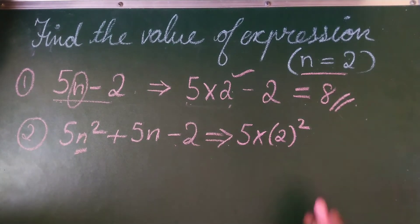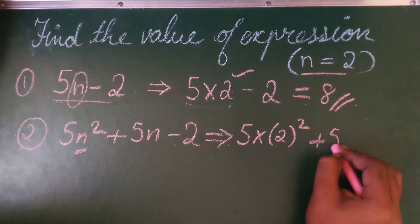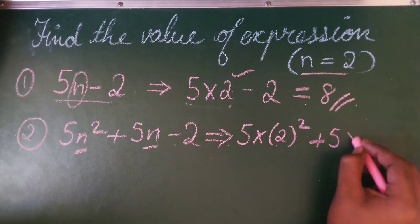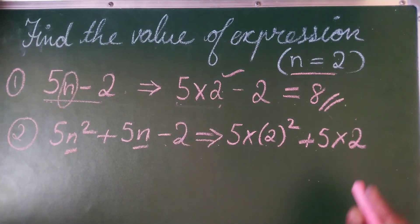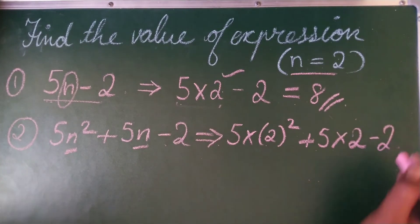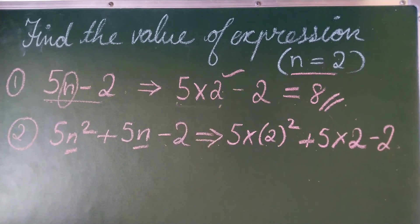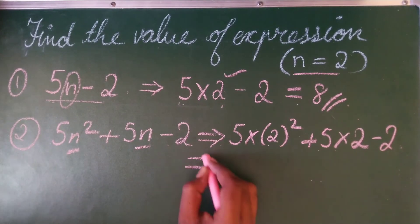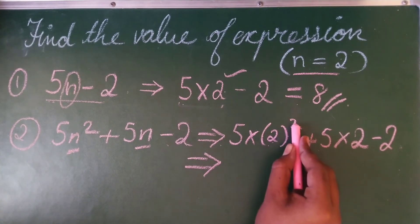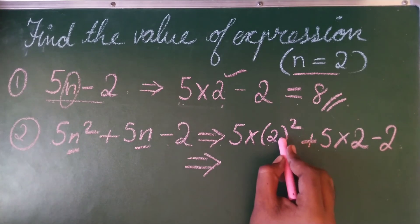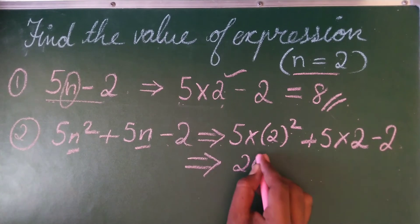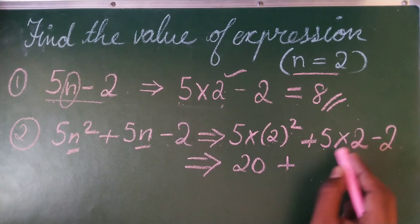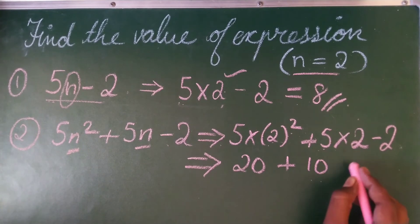Plus 5 into n, that means 5 into 2, correct, 5 into 2 minus 2 as it is. Now just you have to simplify this. This implies 2 squared means 4. 4 into 5 is 20. So 20 plus 5 into 2 is 10. 10 minus 2 is 8.